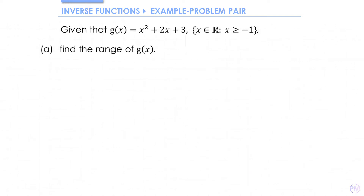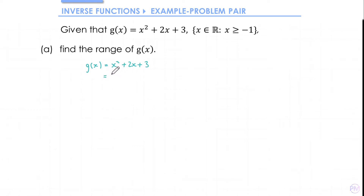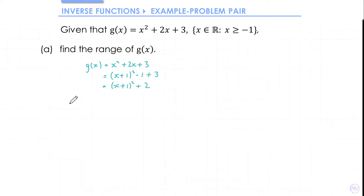In the first part of the question we need to find the range of g. That will be straightforward enough if we complete the square to find the minimum point. We can now see the quadratic has a minimum at (-1, 2), and so the range is g(x) ≥ 2.